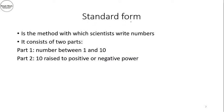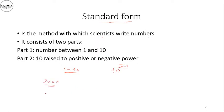Moving on, we will talk about standard form. Standard form is the method scientists use to write numbers. It consists of two parts: the first part is a number from one to ten, and the second part is ten to the power of either a positive or negative exponent.